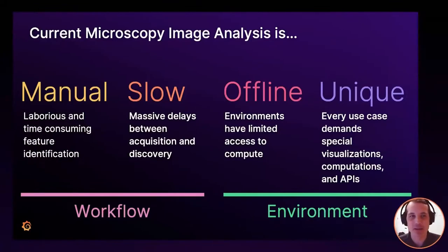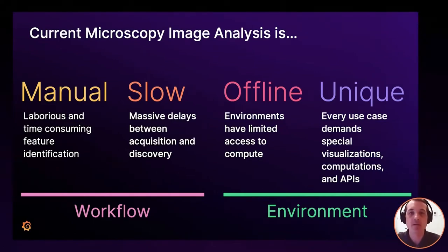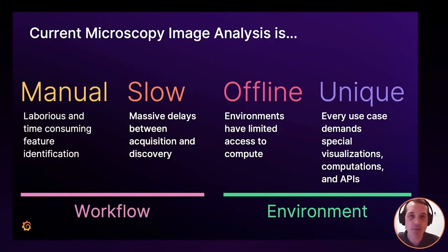Where are we currently at with microscopy image analysis? Right now it's a manual, laborious, time-consuming, and tedious process. All those red boxes had to be drawn by hand by a human. This leads to massive delays because acquisition is done in one location while analysis is done in a different location on a different machine. The microscopes themselves are generally in unusual environments with no internet access — it's all offline, limiting available compute. Every experiment requires specialized visualizations, different calculations, and there's a variety of acquisition software, both open and closed, with various degrees of API documentation and accessibility.